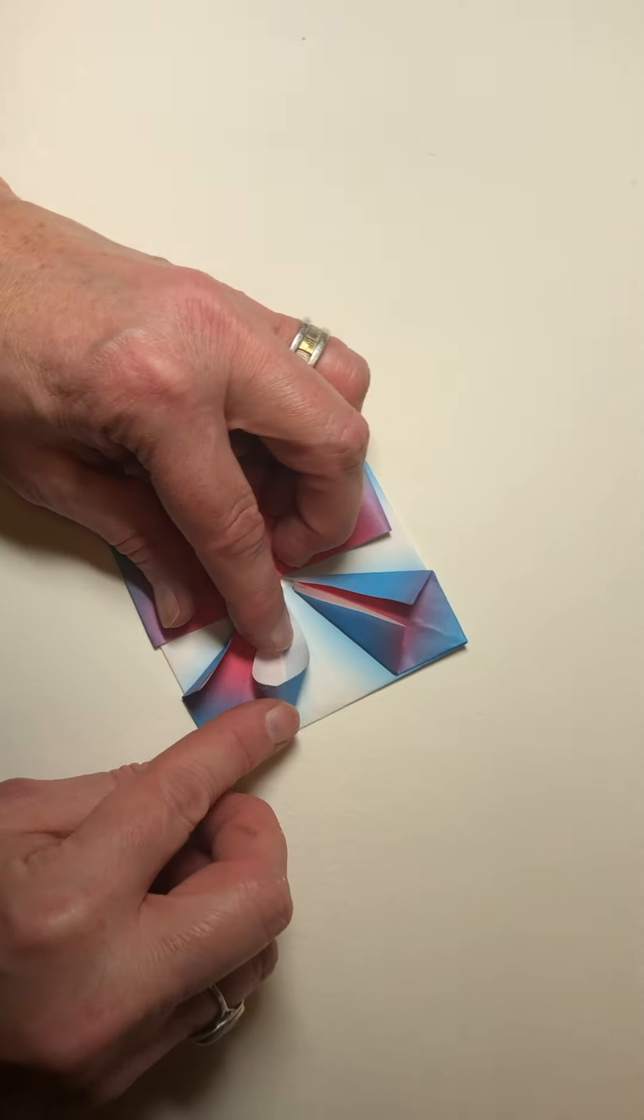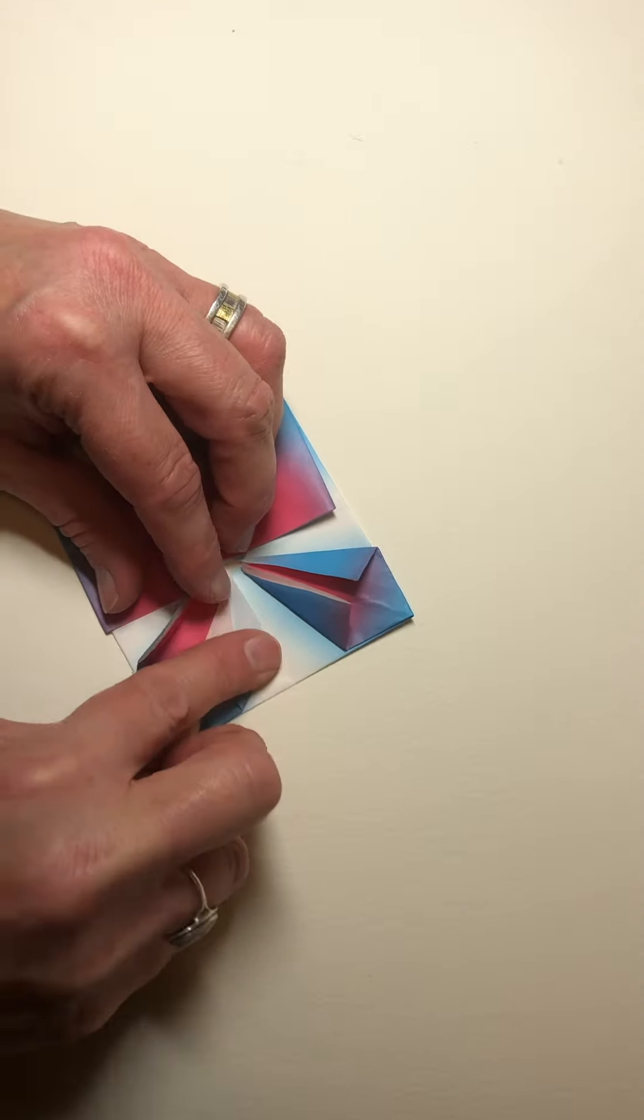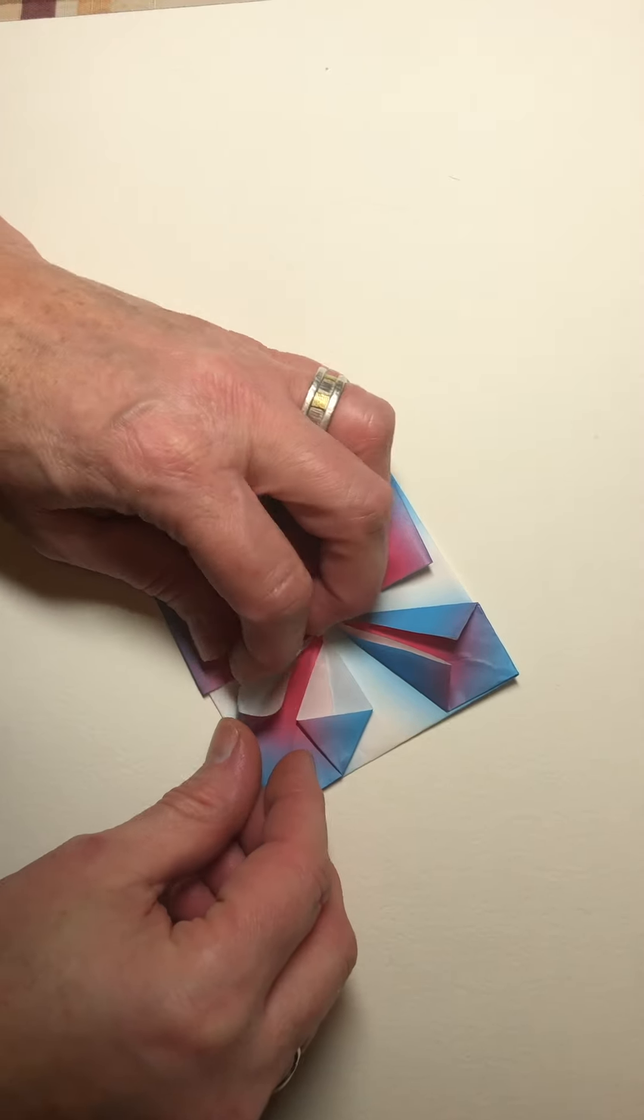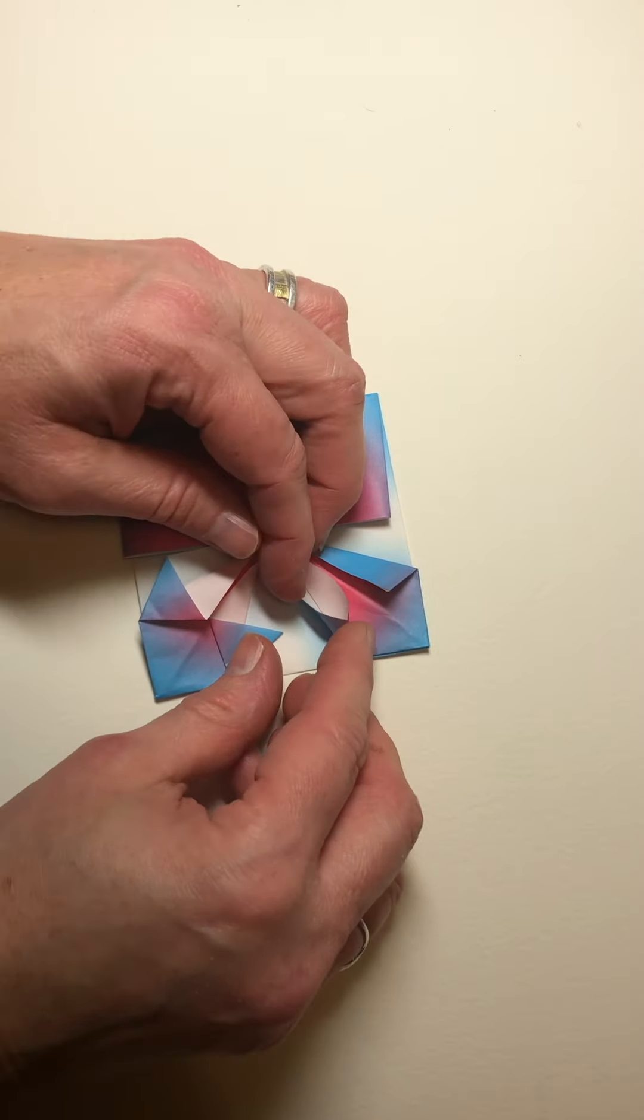And then it's the part where you open this and squash it. And we want to make sure that fold line matches up to that one. And this is what gives us that little wheel look. So we would do that all the way around. And it looks like the little wheel.